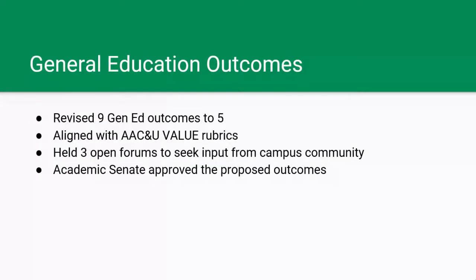The next piece I wanted to speak about was our general education outcomes. We revised our nine general education outcomes down to five. The reasoning was to reduce the numbers so they were truly general education outcomes reflective of learning occurring across the institution, but also to align them with the AAC&U VALUE rubric — aligning general education outcomes with a national standard, and providing a tool that allows us to share a common vocabulary and a shared tool for assessing those general education outcomes. We held three open forums to seek input from the campus community.